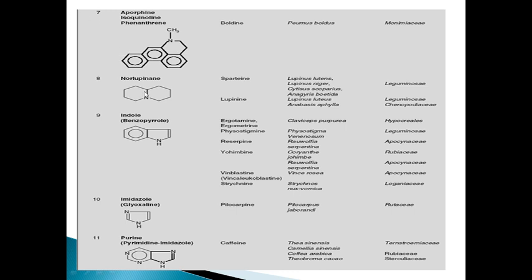Purine alkaloids have two rings — one six-membered ring and one five-membered ring, both with nitrogen. The purine structure contains three to four nitrogen atoms. An example is caffeine, which comes under purine alkaloids. Camellia sinensis is the botanical origin of caffeine.